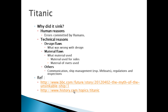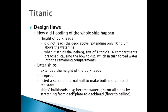You might be wondering why we are discussing Titanic in a software testing course — that will eventually become clear, so just stay with me. Looking at the design flaws: how did the flooding happen? The height of the bulkheads did not reach the deck above — they extended only 10 feet (3 meters) above the waterline. When the ship struck the iceberg, five of the 16 compartments breached, causing the bow to dip, which forced water into the remaining compartments, making the front bottom heavy and causing it to sink.